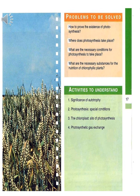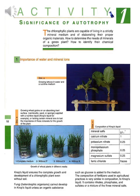These problems are solved according to given activities. The first activity deals with the significance of autotrophy, the second talks about photosynthesis organisms and conditions, the third talks about the chloroplast as the site of photosynthesis, and the fourth talks about photosynthetic gas exchange.